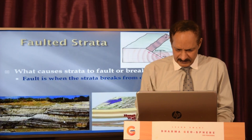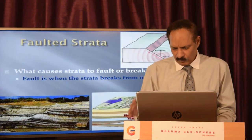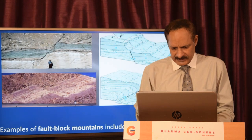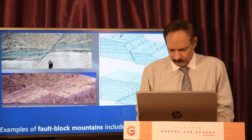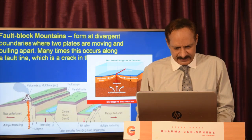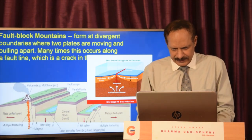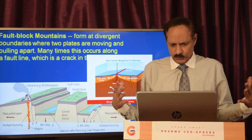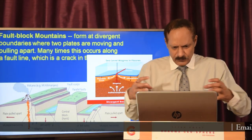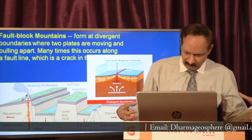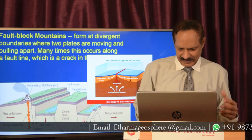This is how a fault strata gets broken and then one block just slips or slides down, and the faulting happens like this — you can see the mountains growing from here. This is the example of the fault block mountain, the Sierra Nevada. They form at divergent boundaries where two plates are moving and pulling apart; many times this occurs along a fault line, which is nothing but a crack.